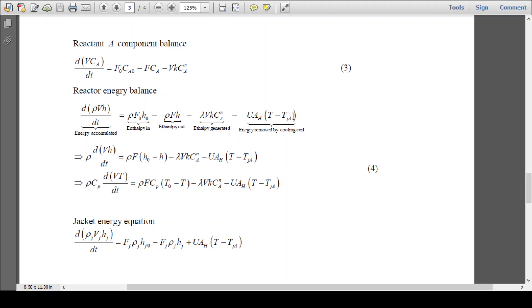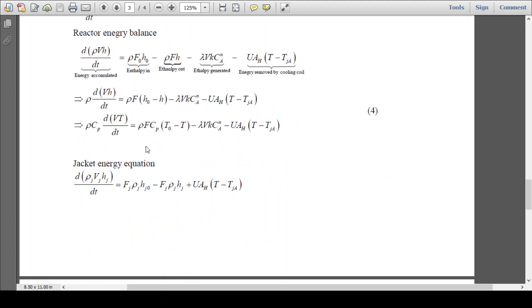Previously in case of mixed case we have taken here T jacket actually. Now then we are putting here that h = C·T. So by substituting that, this is our governing equation: ρCp·dVT/dt = ρFCp(T0 - T) - λVkCa^n - UAh(T - Tg_average).